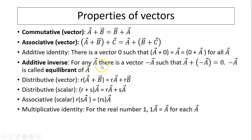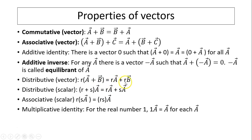Additive inverse: for any vector a, there is a vector negative a such that a plus negative a equals 0. Negative a is also called the equilibrant of a. Distributive property: if r is a scalar quantity times vectors a plus b, you can distribute r, so that equals r times a plus r times b. You can also distribute scalars.